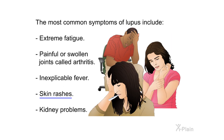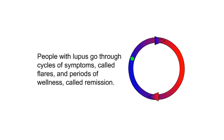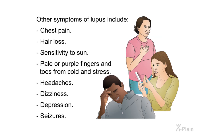The most common symptoms of lupus include extreme fatigue, painful or swollen joints (called arthritis), unexplained fever, skin rashes, and kidney problems. People with lupus go through cycles of symptoms called flares and periods of wellness called remission.